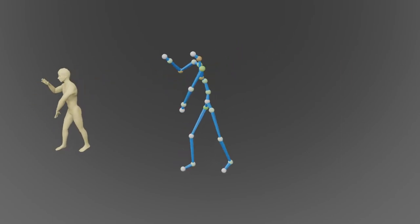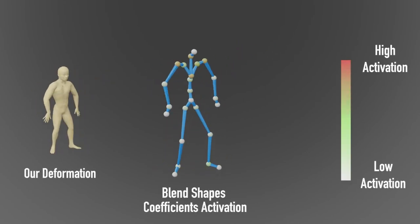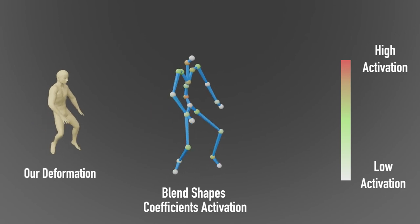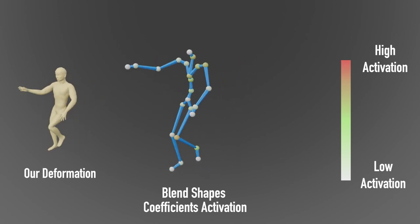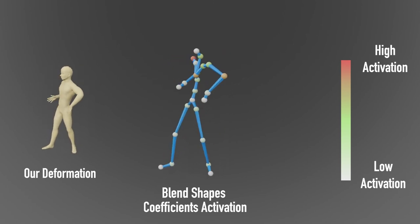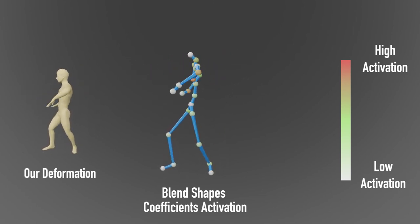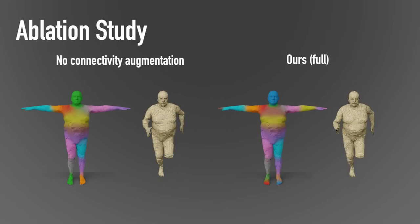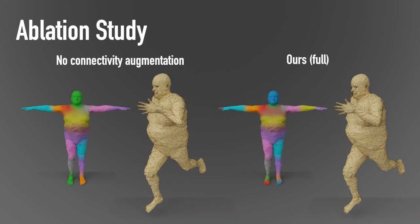Here we visualize the activation of the blend shape coefficients as a function of pose. Despite not being supervised directly, the network infers an accurate relationship between the two. When the network was trained with no connectivity augmentation and no garment augmentation, it can be seen that the network struggles to generalize the skinning weights to unseen characters.